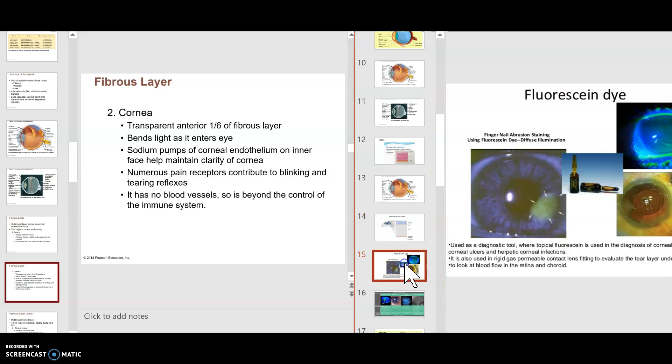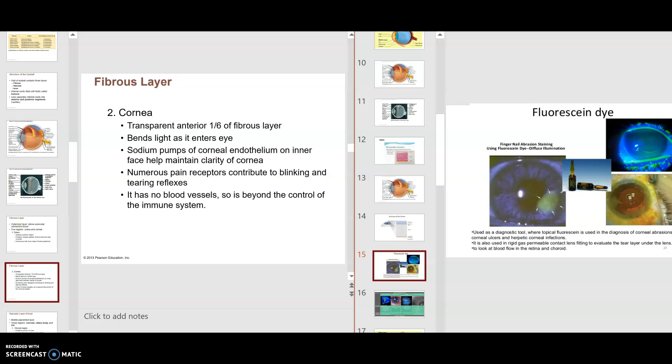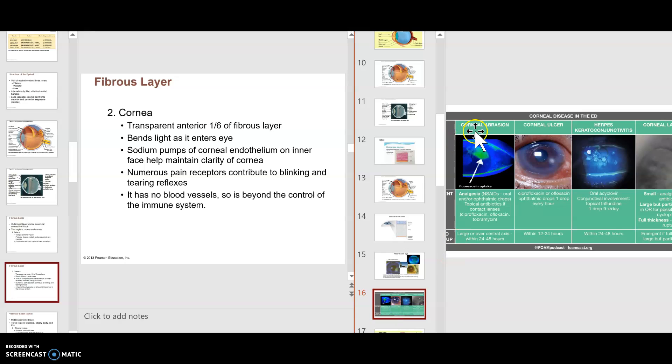When you look at the cornea, you can get corneal tears, abrasion, things of this nature here. What the physician would do would be to come in and put a fluorescein dye, and that fluorescein dye would unveil many things that you would see in the cornea, such as tears, abrasions, corneal abrasions, ulcers, things of this nature. So the cornea, because you want it to be perfectly transparent and have no defects within it.